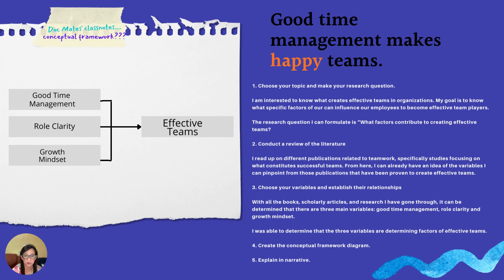You can screenshot it and follow how I created a quick rundown of the conceptual framework just following the steps. First, choosing the topic — I've chosen the topic which interests me, which is how to create effective teams in organizations. My goal is to know what specific factors can influence employees to become effective team players. The research question I can formulate is: what factors contribute to creating effective teams? Very straightforward. Then I conduct a review of literature — reading different publications related to teamwork, specifically studies focusing on what constitutes successful teams. From here, I can already have an idea of the variables I can pinpoint.